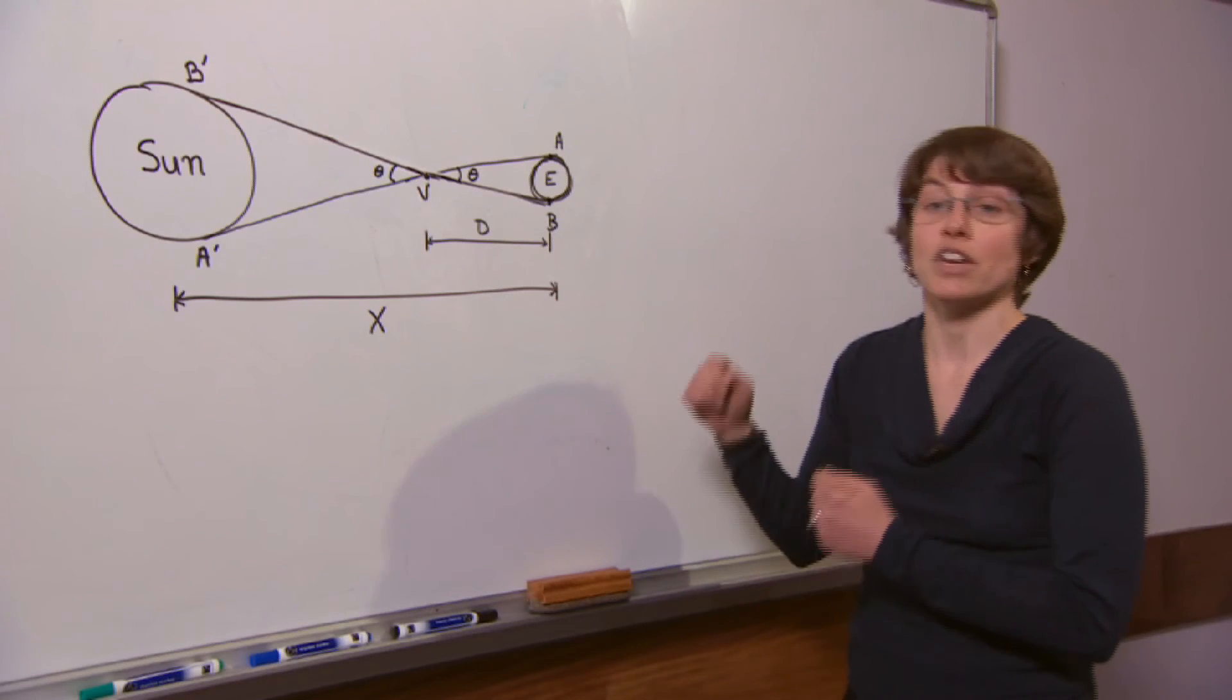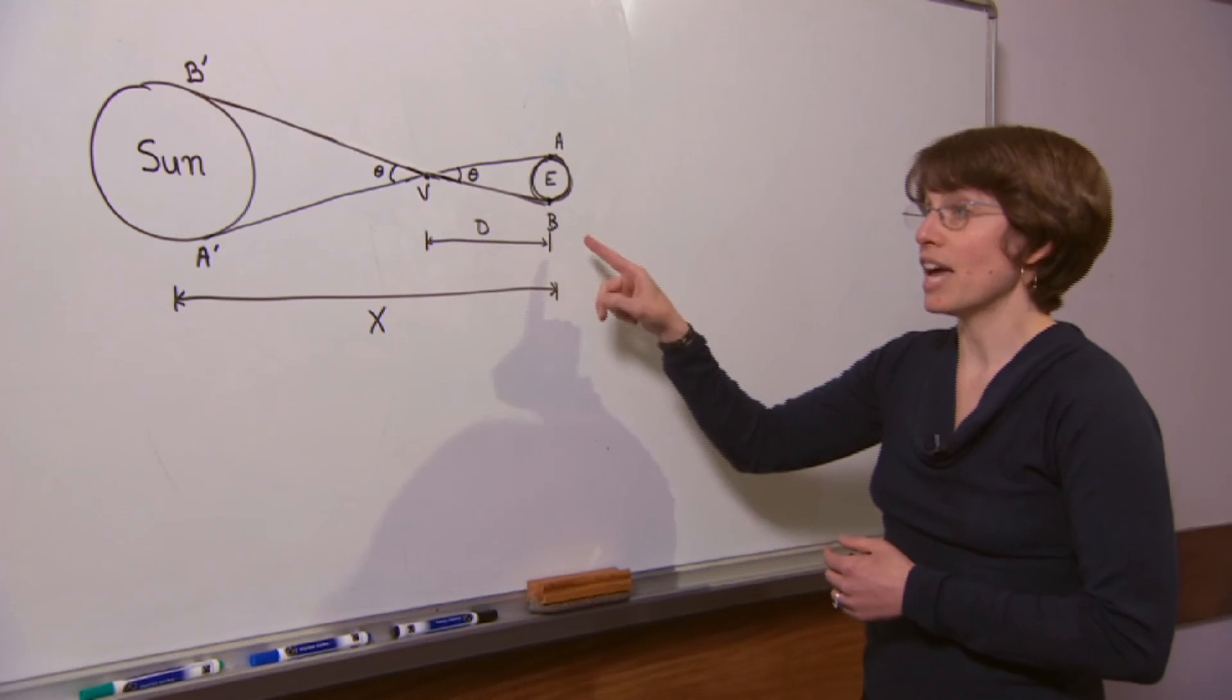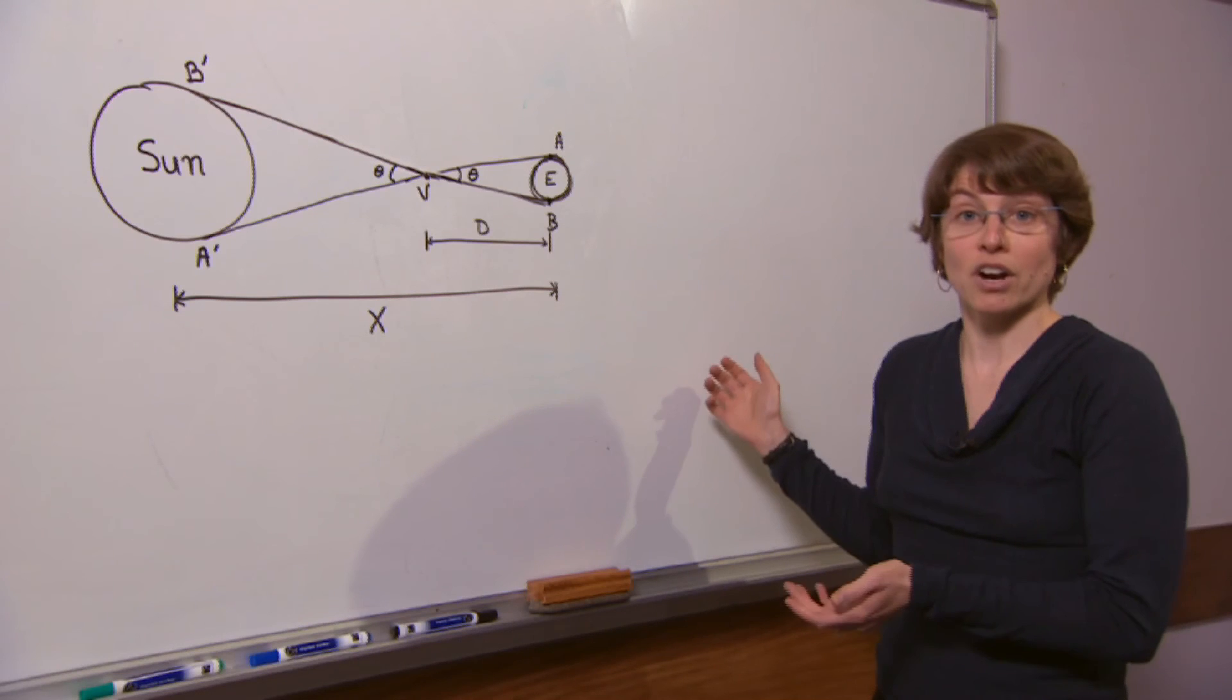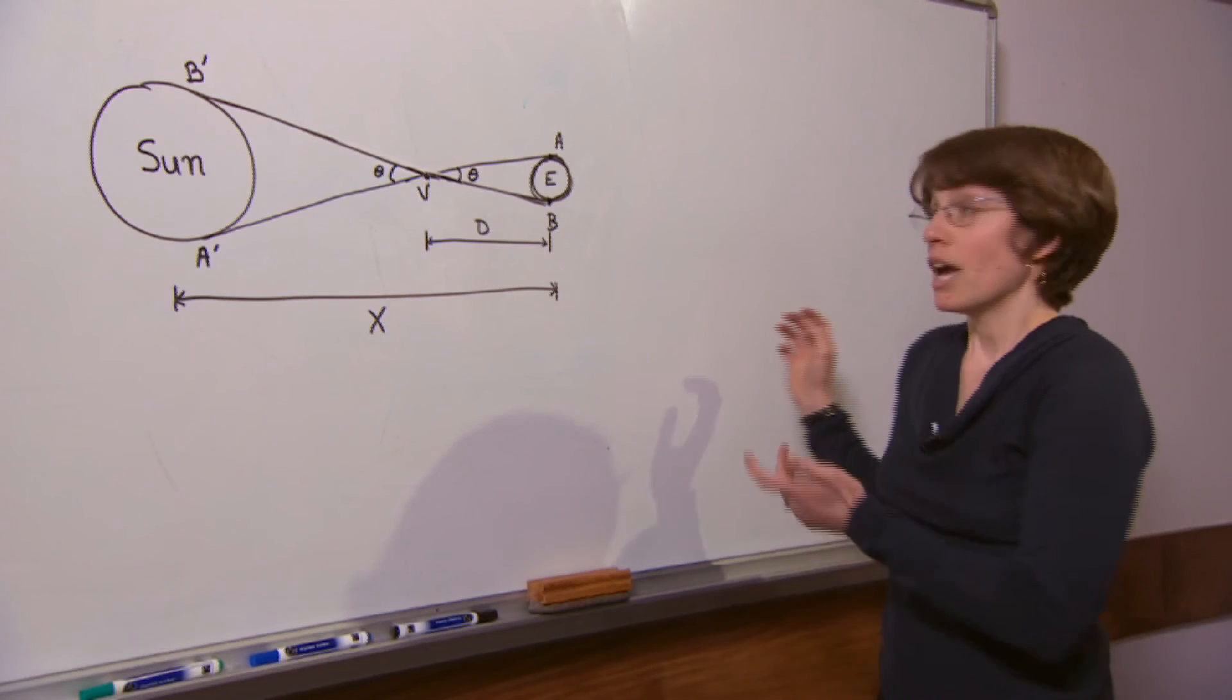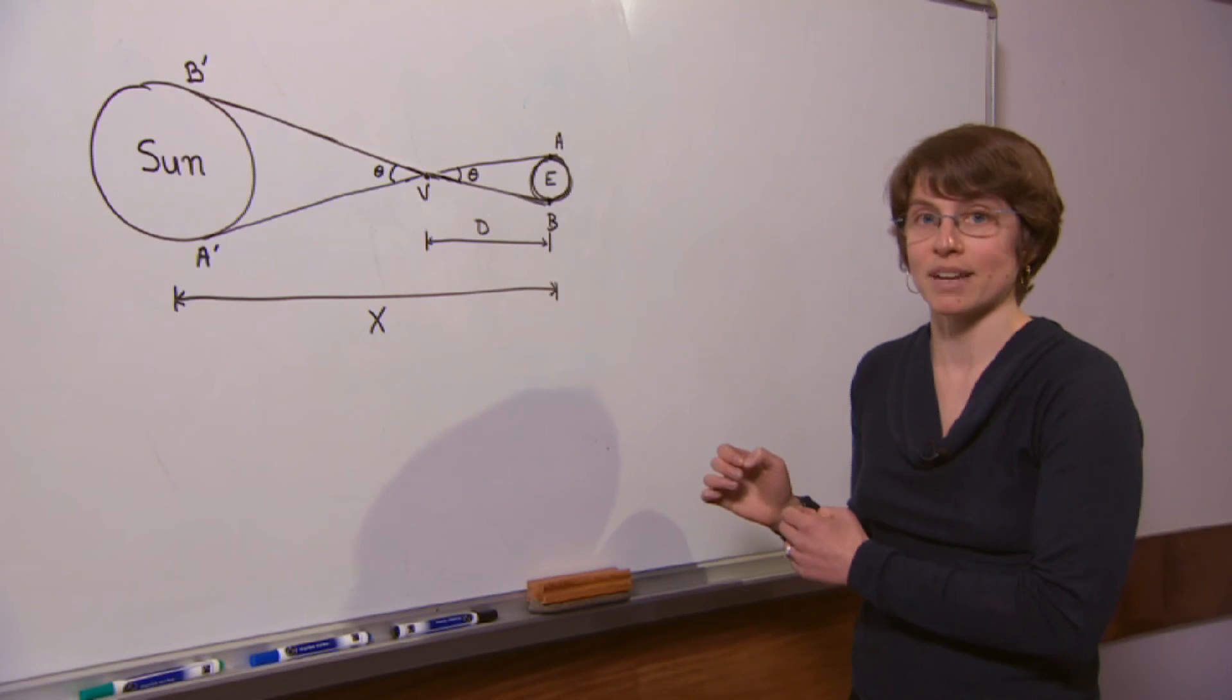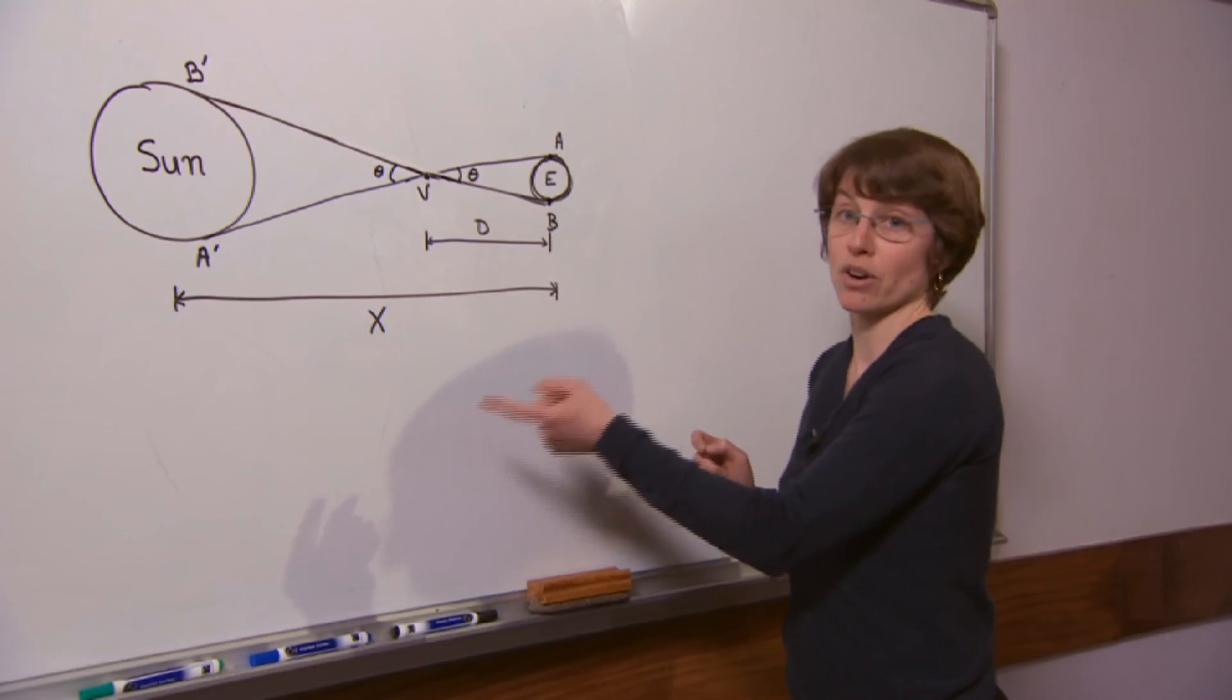Once they had theta they could then determine d, the distance between the earth and Venus, and then determine the absolute distance between the earth and the Sun, and then get the entire size of the solar system. And with this technique the measurement that they came up with was only three percent off of the current measurement of the distance between the earth and the Sun.